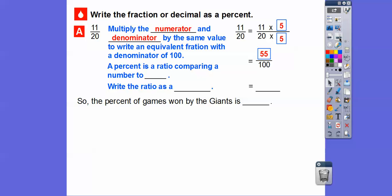Remember, a percent is a ratio comparing a number to 100. So write the ratio as a percent. 55 over 100 is 55 hundredths, and percent means per 100, so this is going to be 55%. So the percent of the games won by the Giants is 55%.